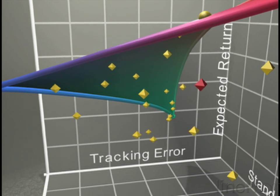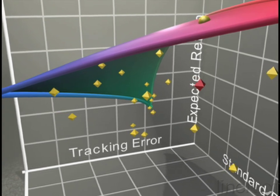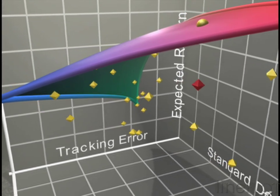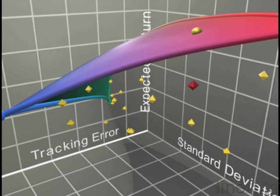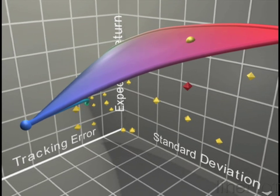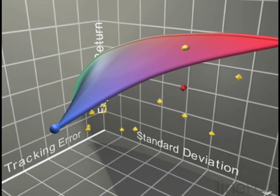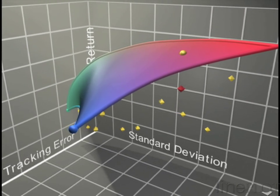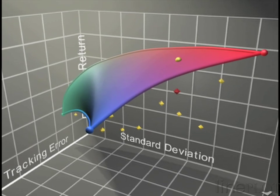Many investors care about both absolute performance and performance relative to a benchmark. In some cases, the benchmark serves as a performance standard. In other cases, it represents liabilities such as the present value of benefit payments or spending obligations. For investors faced with the dual challenge of achieving absolute and relative objectives, our advanced risk measurement technology offers a superior solution.